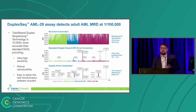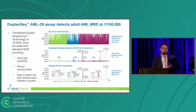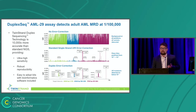Duplex sequencing is an error correction method for NGS that is 10,000 times more accurate than NGS alone. We used it to make a very sensitive AML MRD assay called AML-29. In this figure, I'm showing data from one contrived sample processed with three different levels of error correction. The different color sections are different genes, and the three panels show the data processed different ways. In the top panel, we're looking at standard NGS with no error correction applied. Standard NGS has an error rate of about 1 in 1,000. When you zoom in to 1 in 1,000 on the Y axis, it's just noise — you don't really get anything useful.